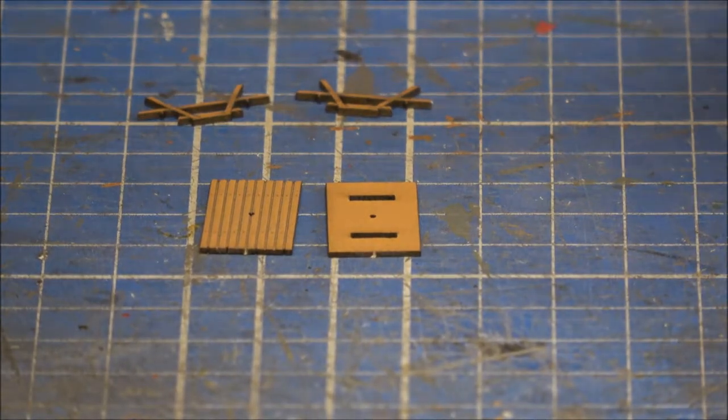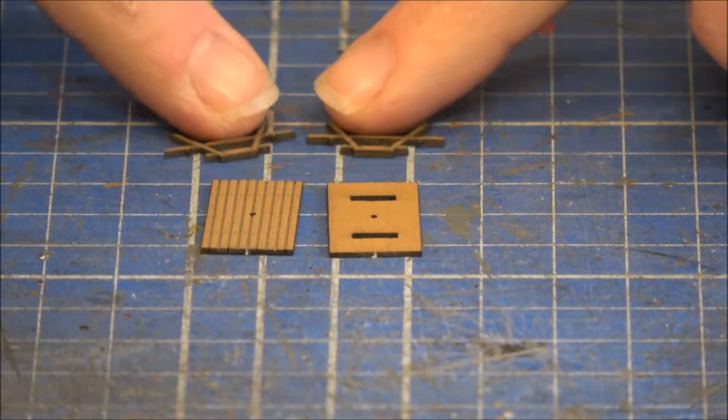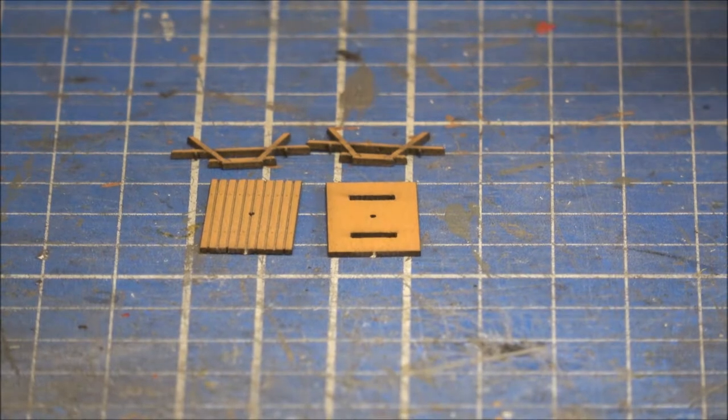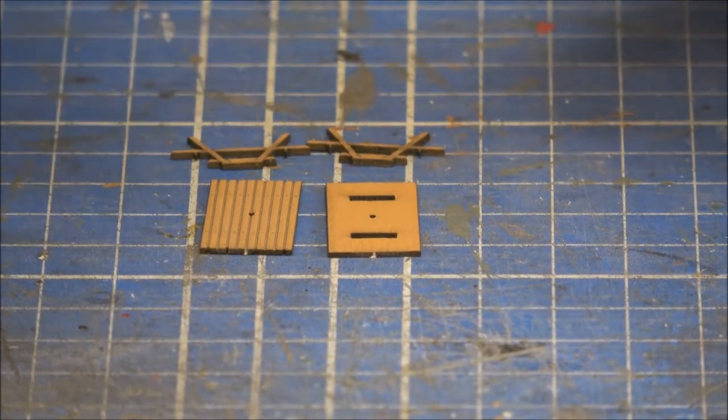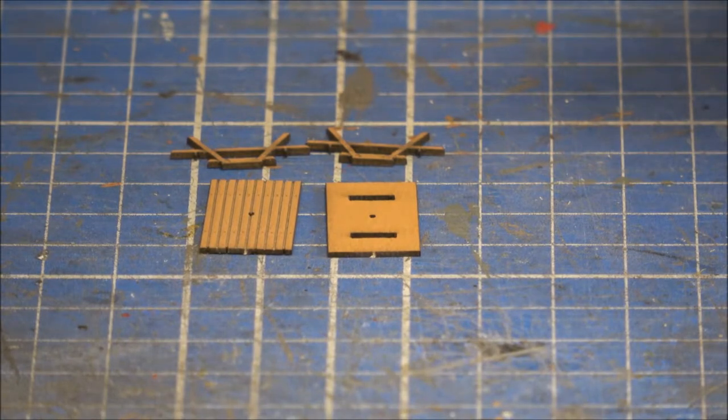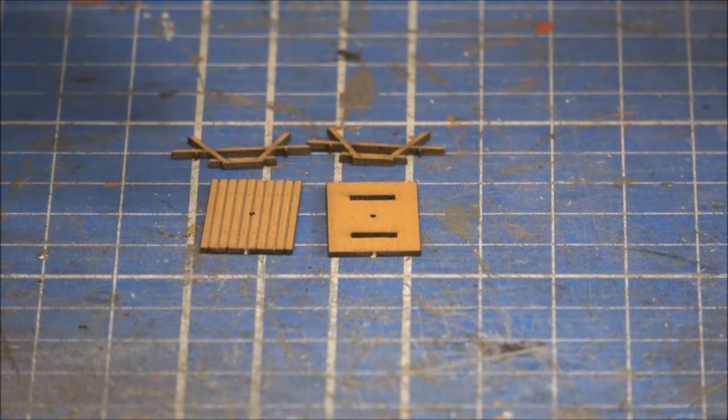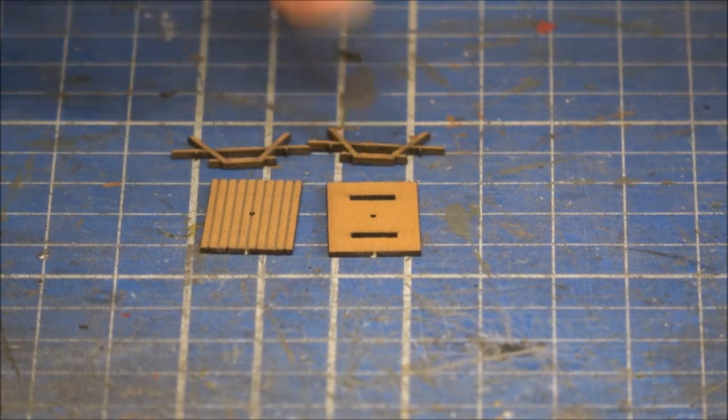Right, I've zoomed the camera in a bit more because these are quite small parts, so you can see a little bit better. And now we've cut out the basic parts for the bench, which will be the two top parts and the two legs.